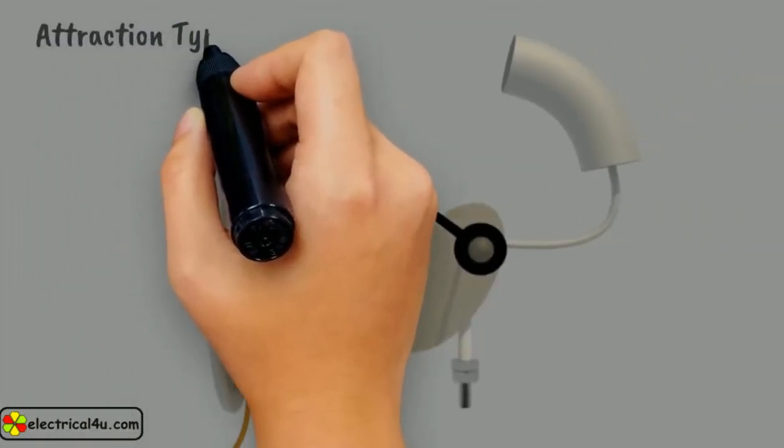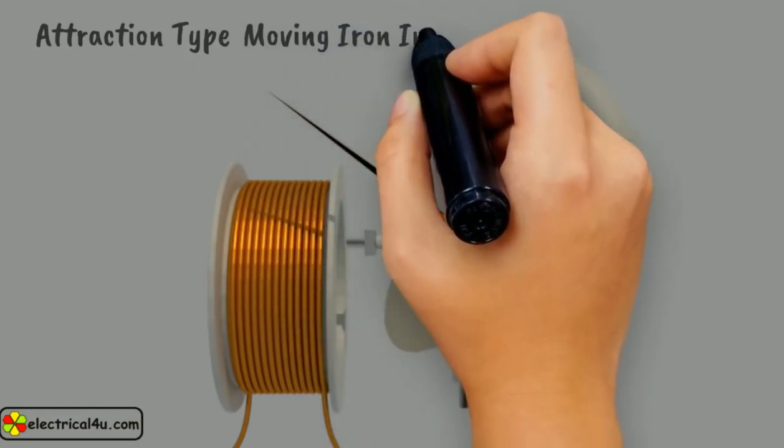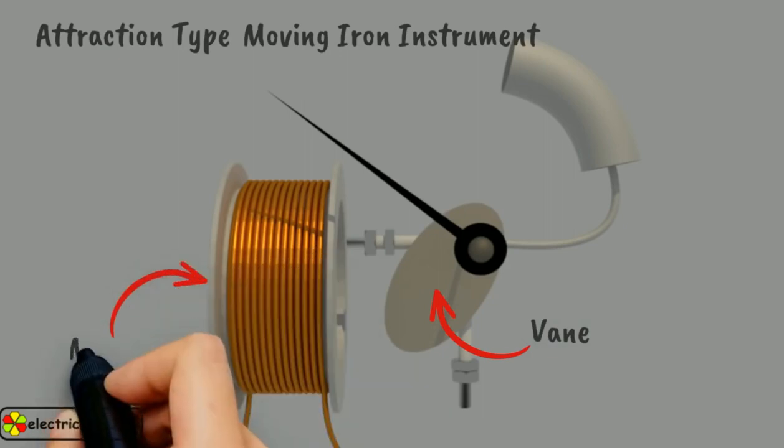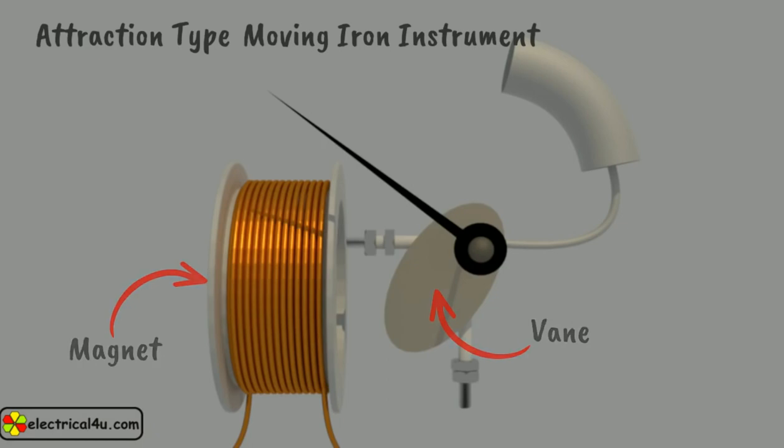Now let us come to the attraction type moving iron instrument. A piece of soft iron vane is placed near a magnet so that it would be attracted by the magnet. The force of this attraction depends upon the strength of the magnetic field. If the magnet is an electromagnet,